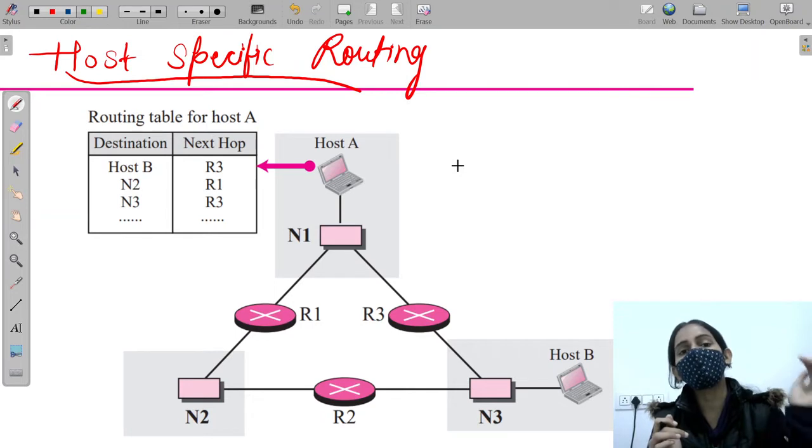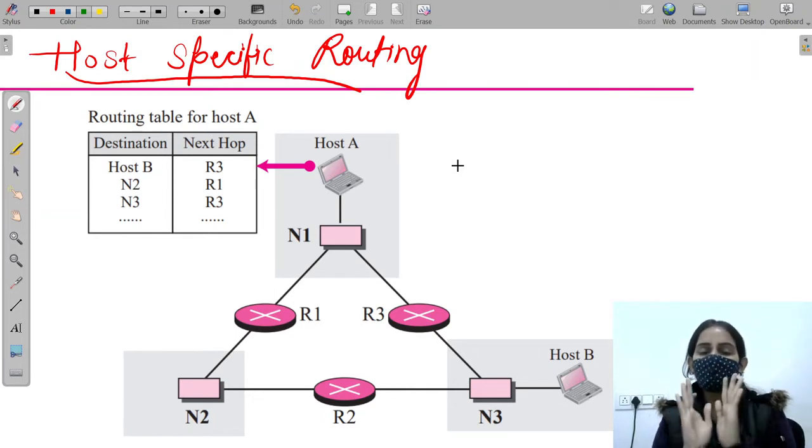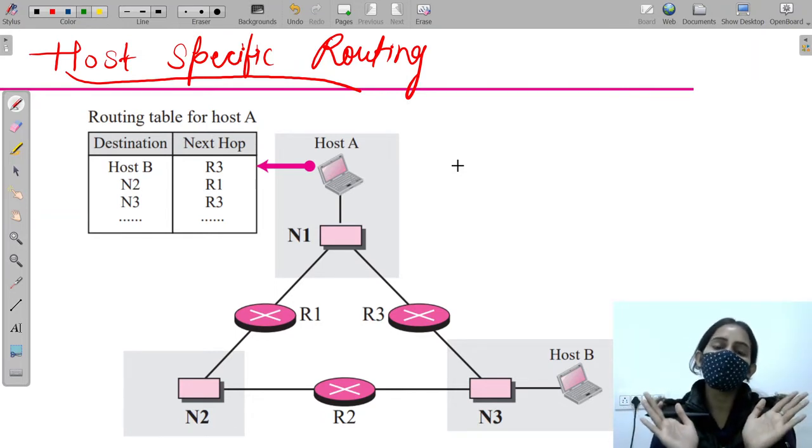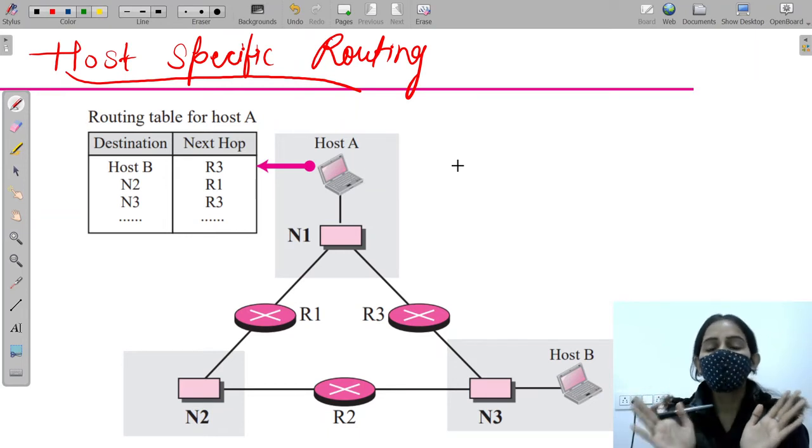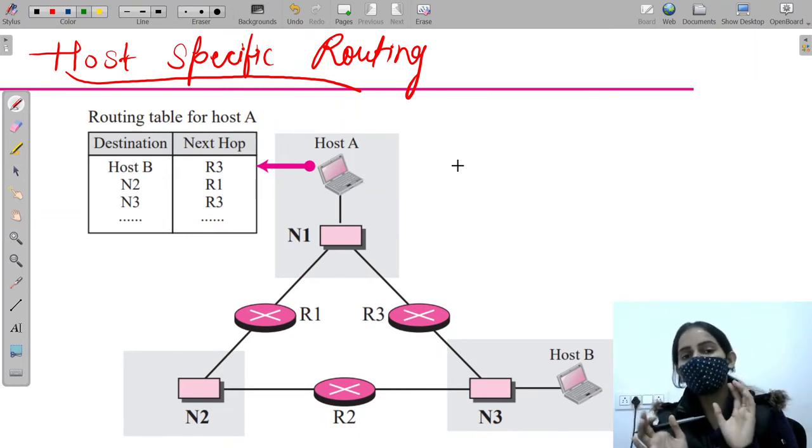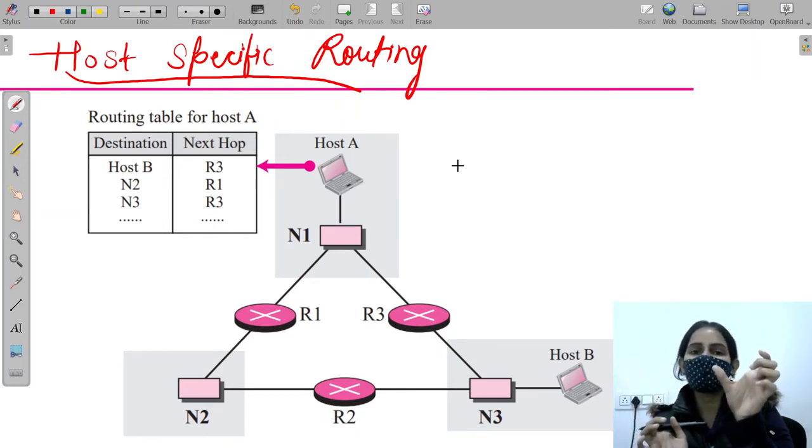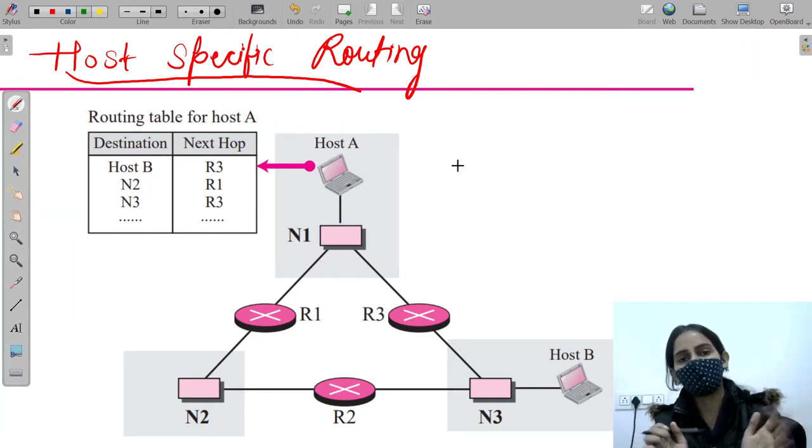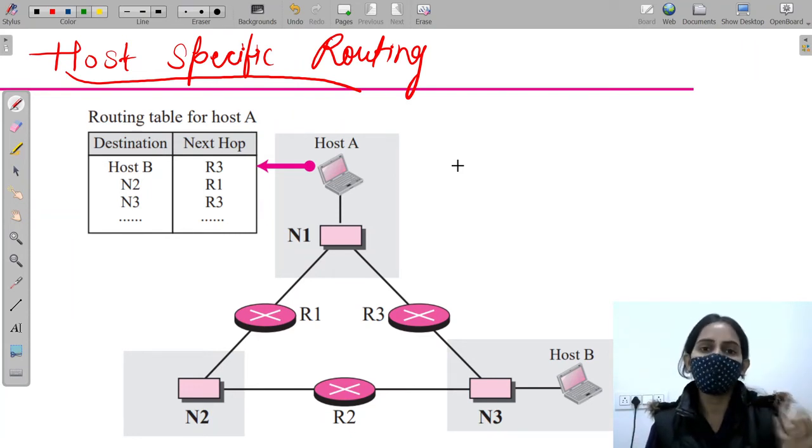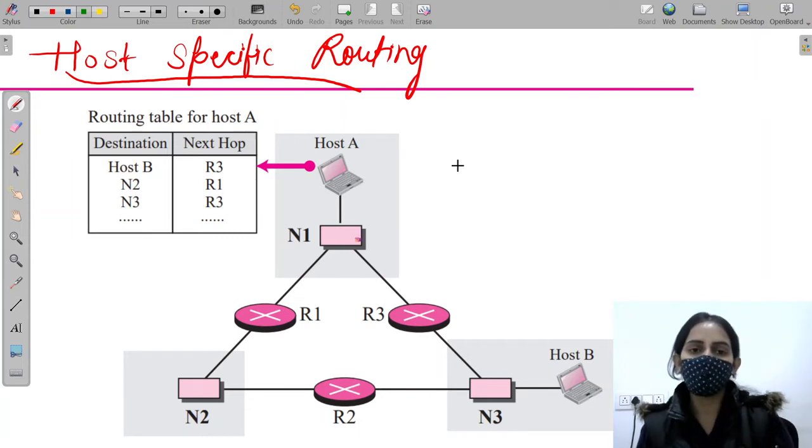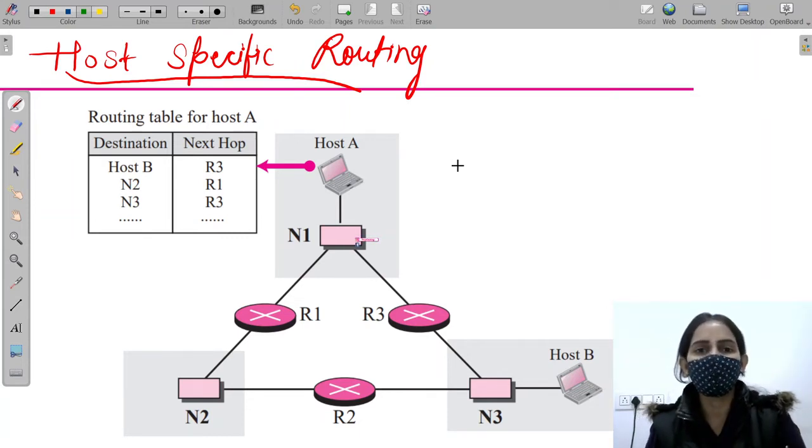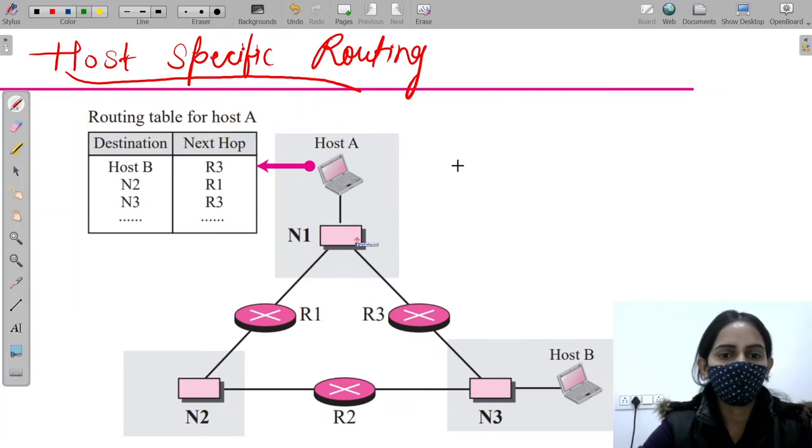Suppose there are two paths to go to that destination. You want that each time if that is the destination, then only this path needs to be followed. You can mention that in your routing table. For security purposes, you may use this approach.